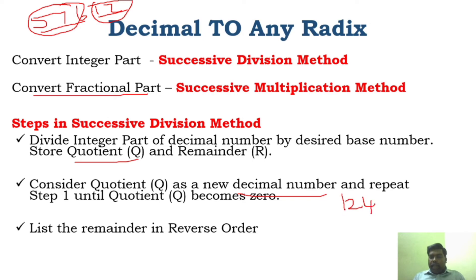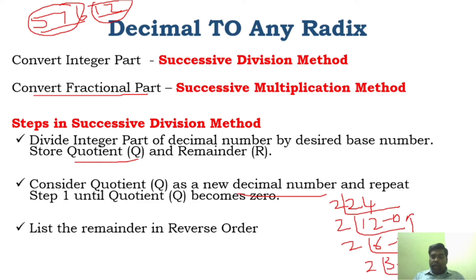For example, to convert decimal 12 to binary: divide 12 by 2 — quotient 6, remainder 0. Divide 6 by 2 — quotient 3, remainder 0. Divide 3 by 2 — quotient 1, remainder 1. Divide 1 by 2 — quotient 0, remainder 1. Writing remainders from bottom to top gives 1100. The base can be 2, 8, or 16 depending on what you need.